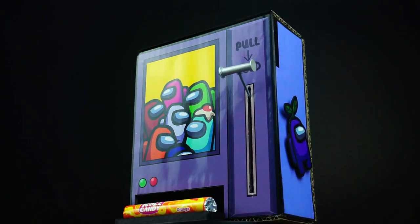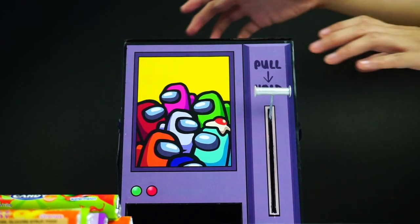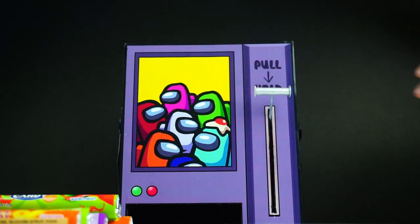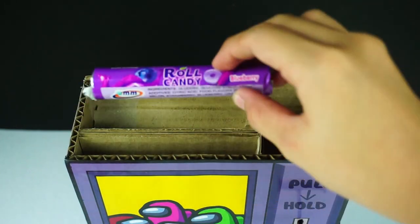I hope you guys like this DIY Among Us candy machine made from cardboard. This machine can store up to seven candies, but if you want yours to store more you can simply make your machine bigger to have more room for the candy storage.